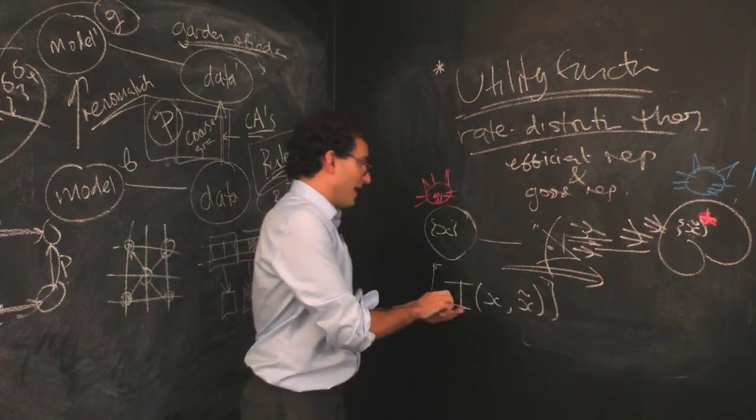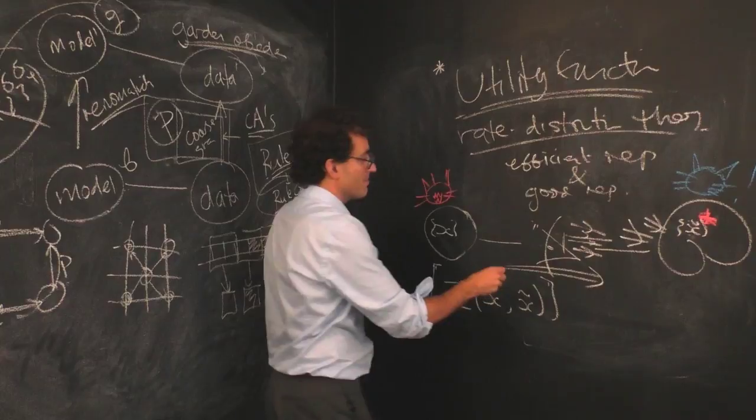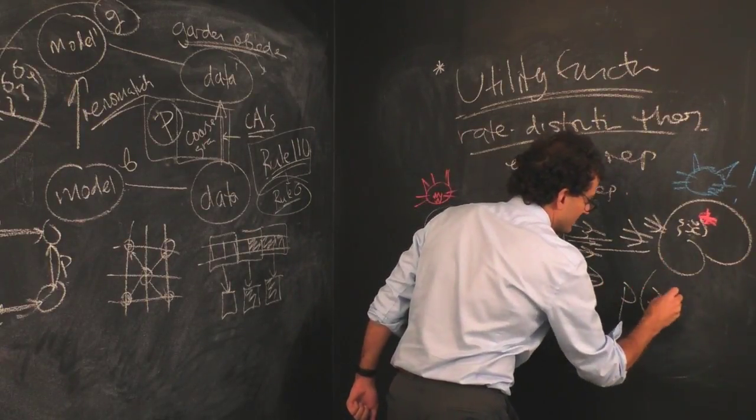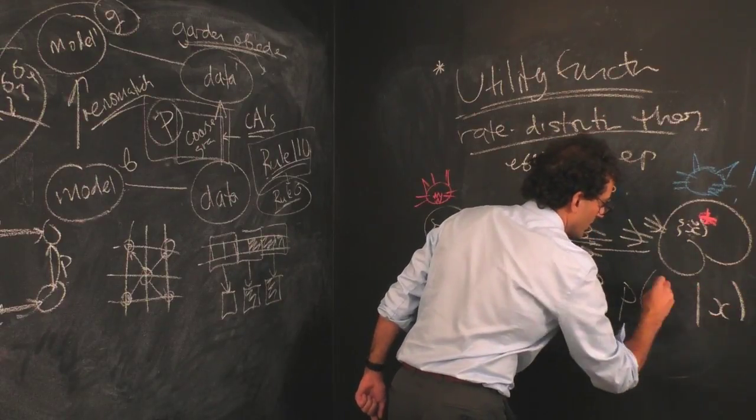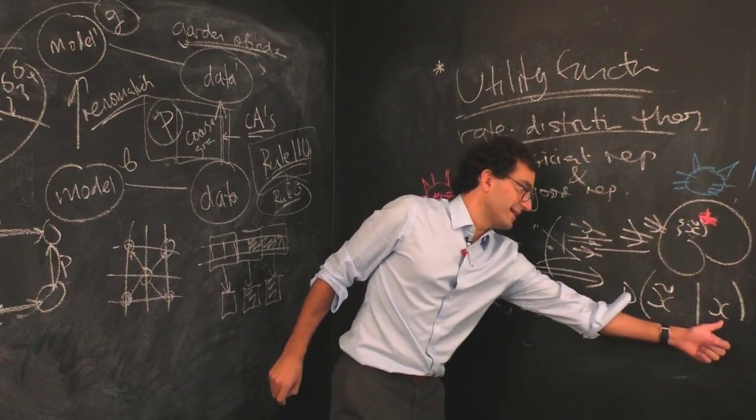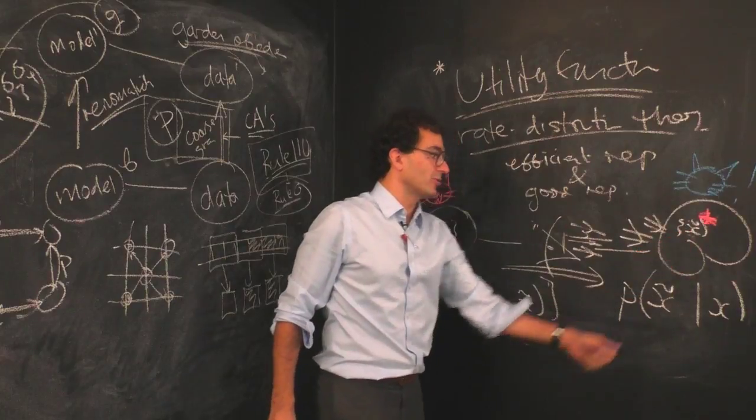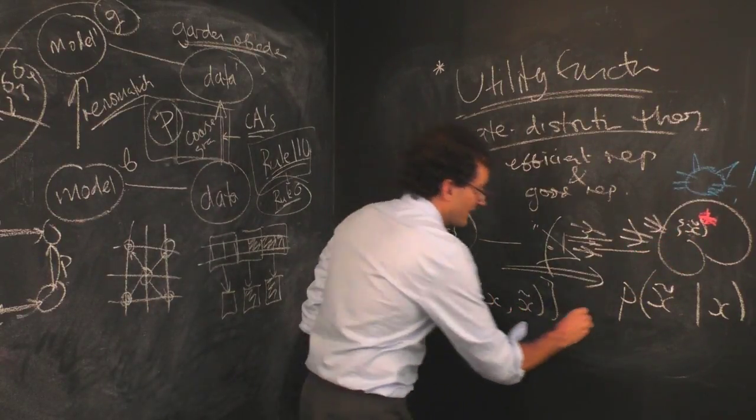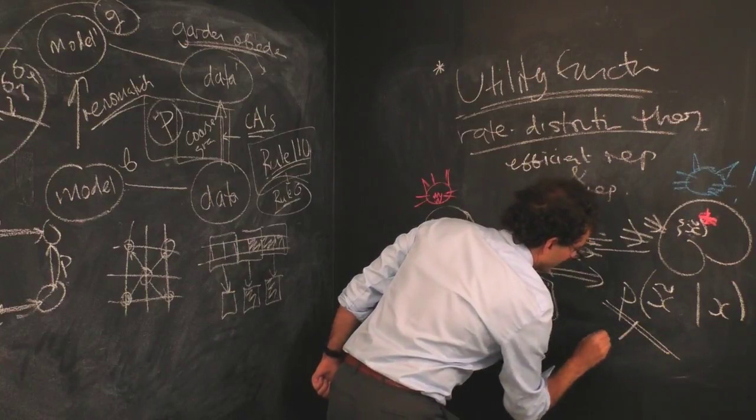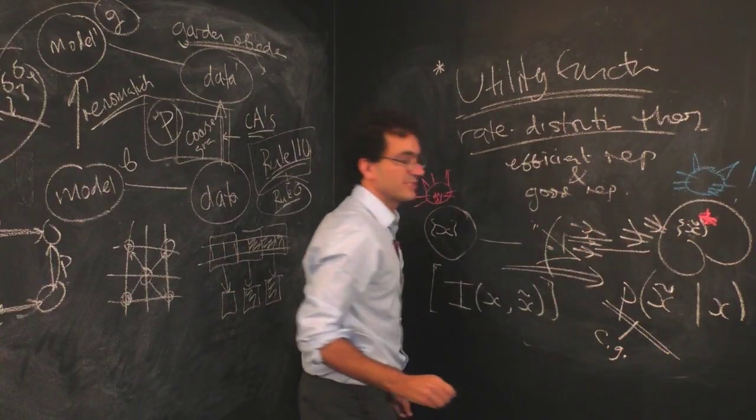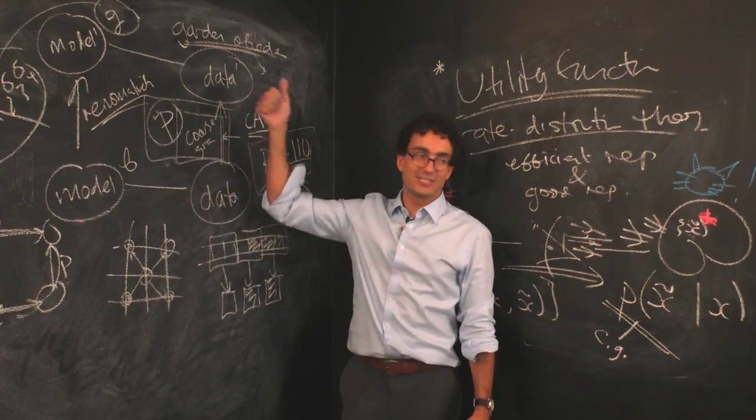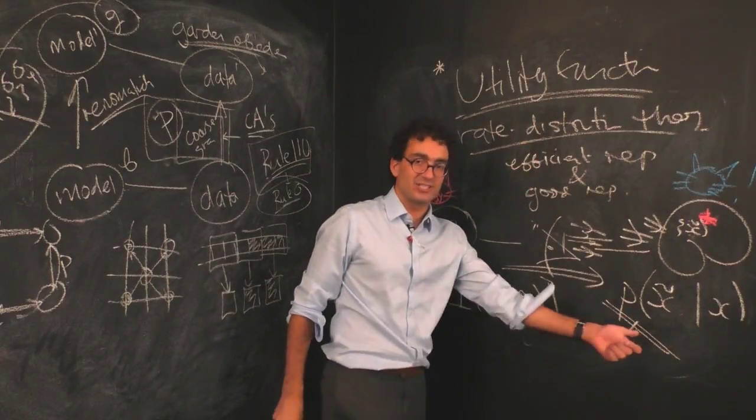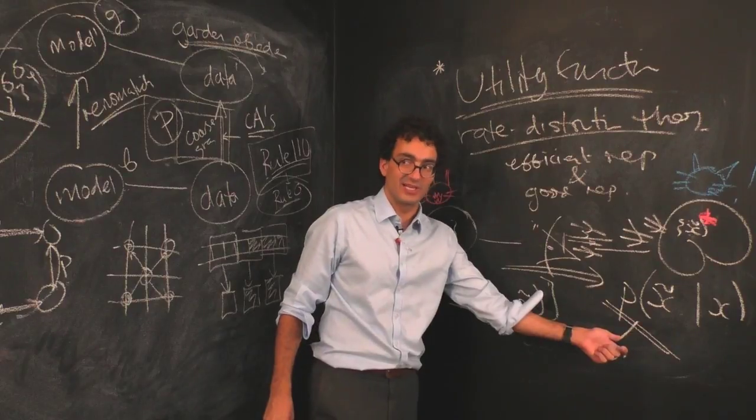Now in general, you're going to have some map and we can represent the eye as probabilistically taking a state of the world and mapping it into an internal representation. For the rate distortion story, this is your coarse graining, your coarse graining prescription, your projection operator. Now there's two subtle things about this. The first one, this is not actually a hard clustering, this is a soft clustering.